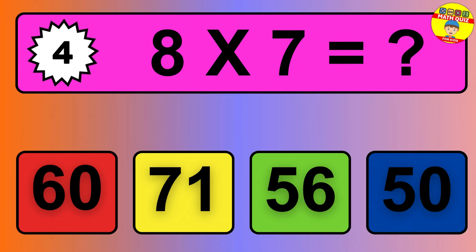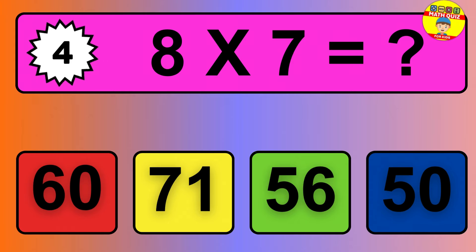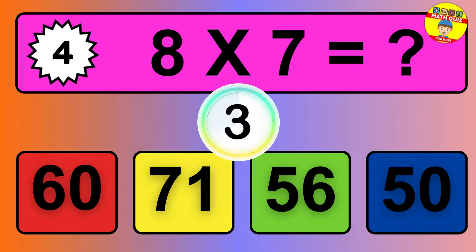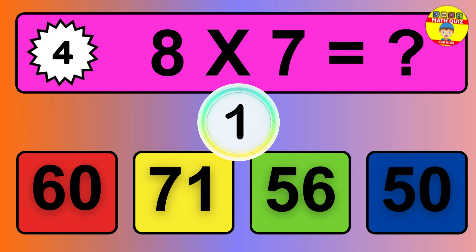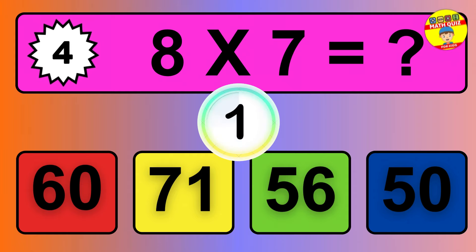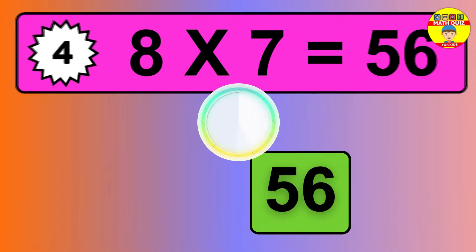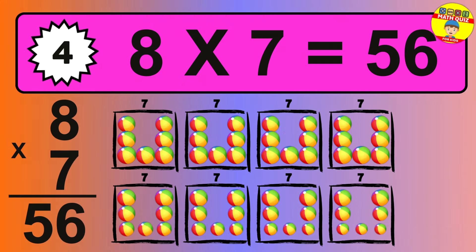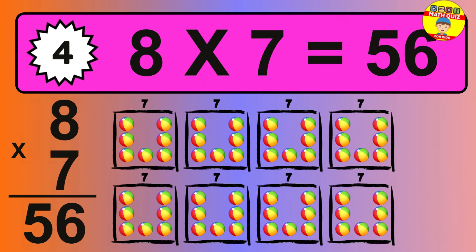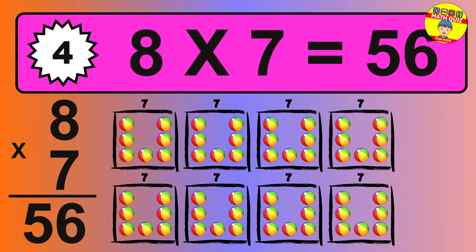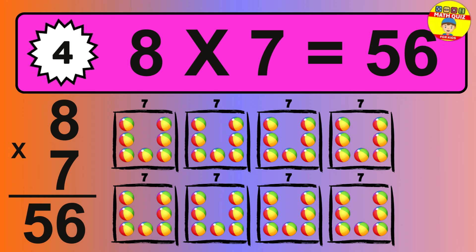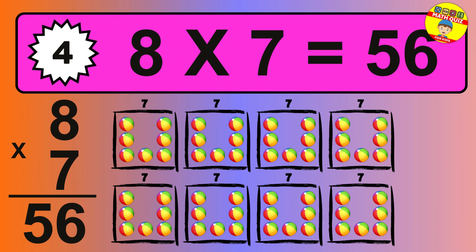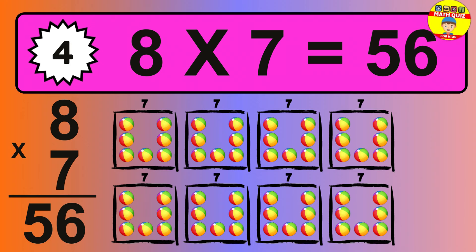Question 4. 8 times 7 equals what? The answer is 8 times 7 is 56. To calculate, we have 8 groups with 7 balls each one. So how many balls do we have? 56 balls.